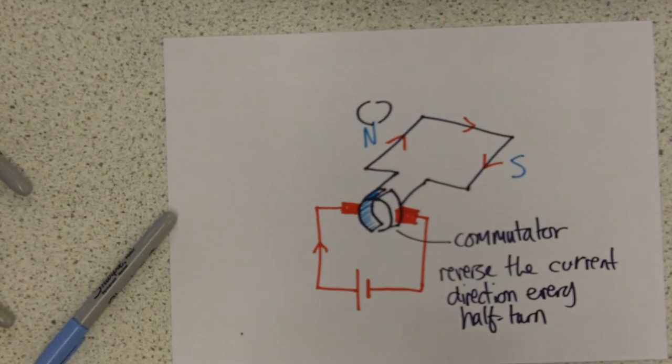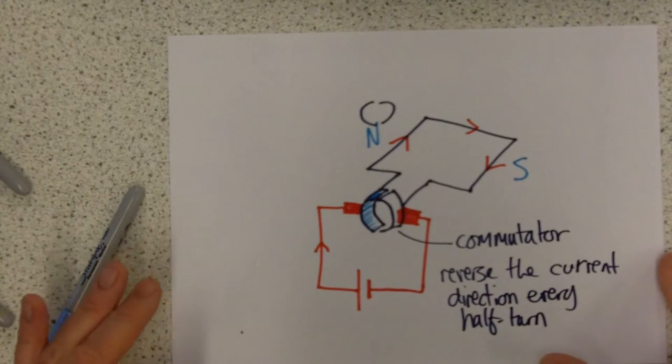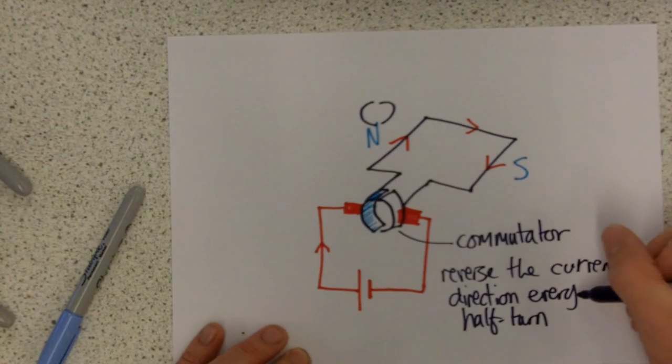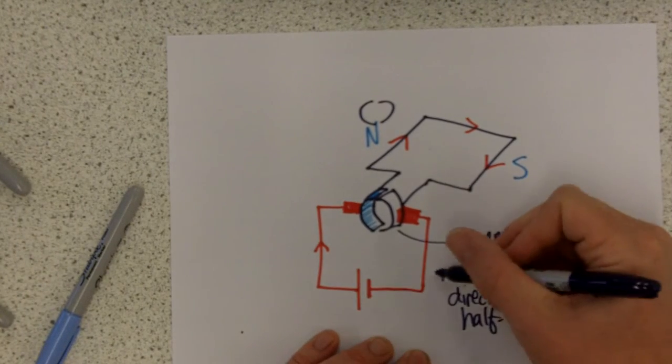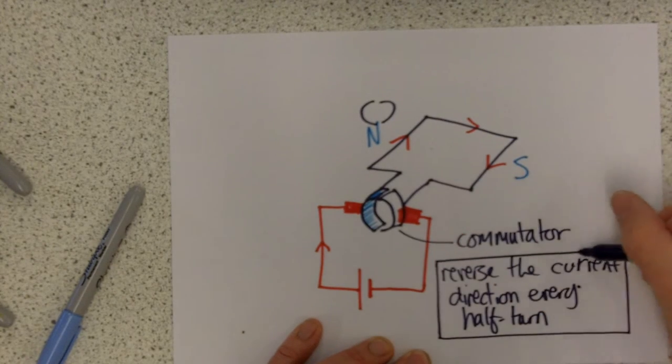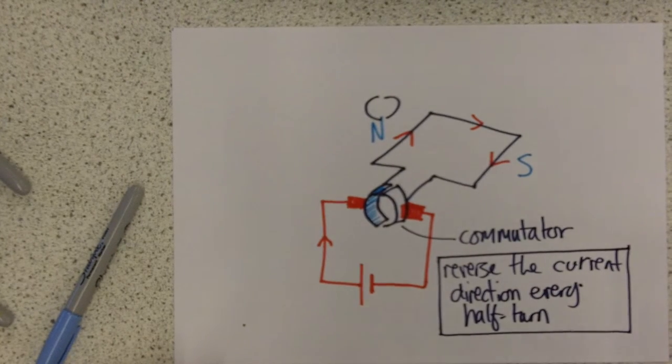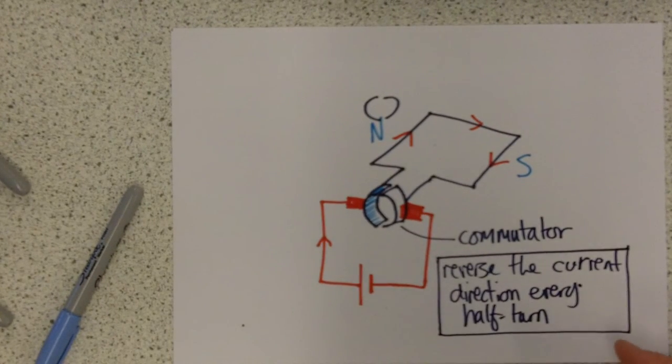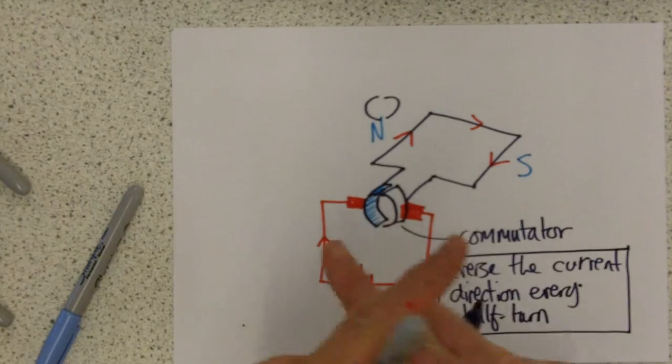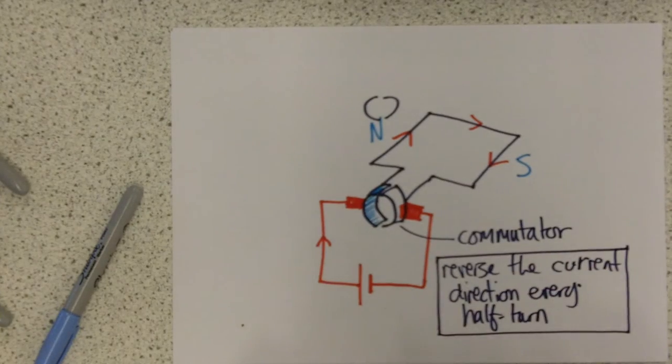Its job is to reverse the current direction every half turn. Now I've tried to explain this to many, many people over the years until I'm blue in the face. And it's one of those things that some people get and some people really struggle with. If you really struggle with it, then this is your magic phrase in the exam. Because it's really the only thing that can be asked about a commutator. What does it do? What it does is it flips the current direction every half turn in order to keep the magnet spinning over and over and over the same direction, as opposed to flipping back and forth if it was connected directly.